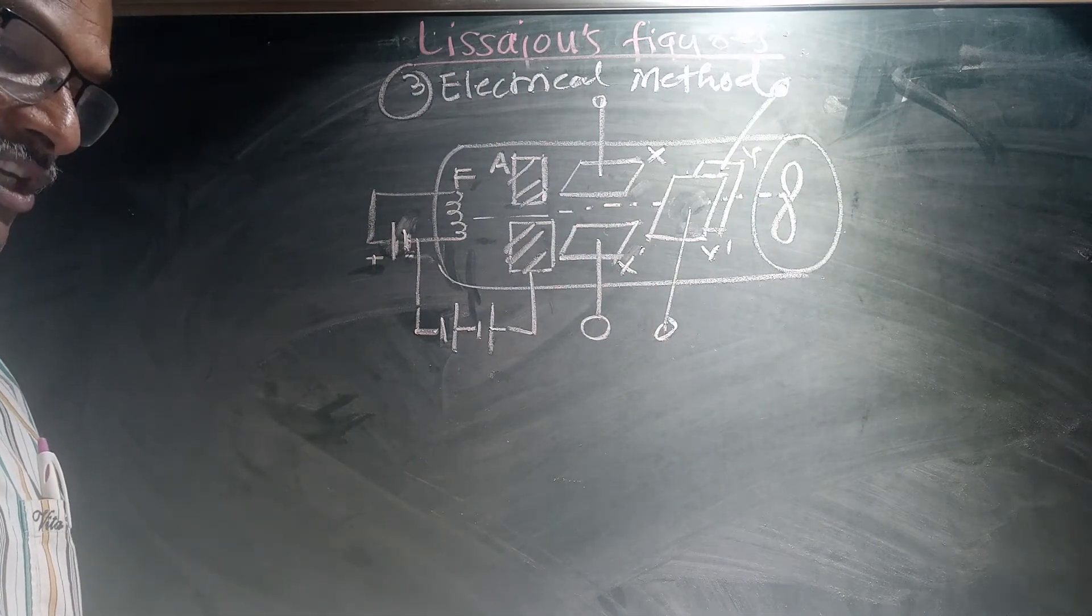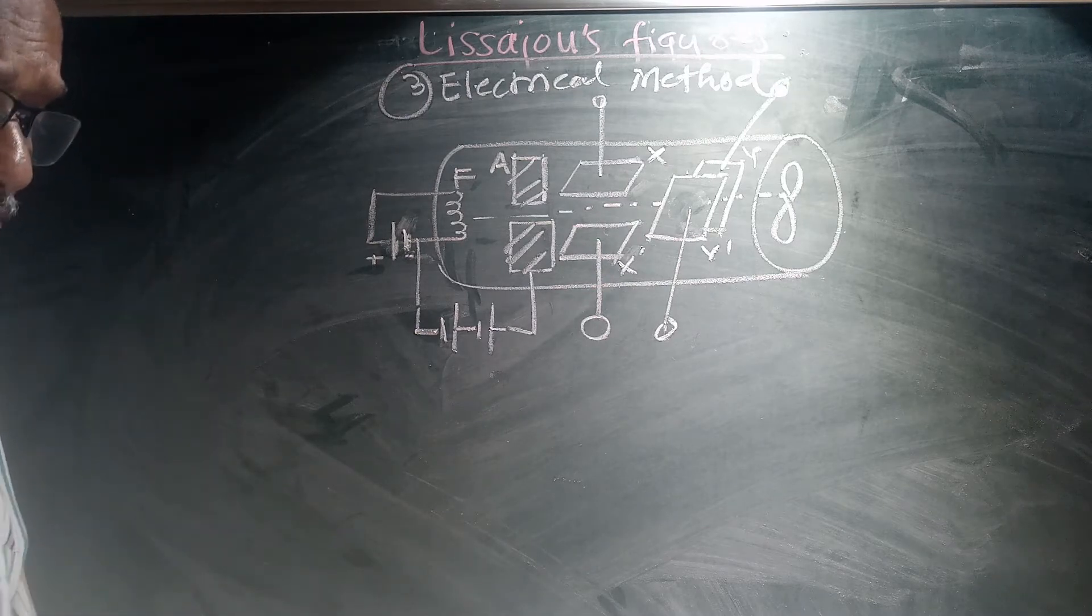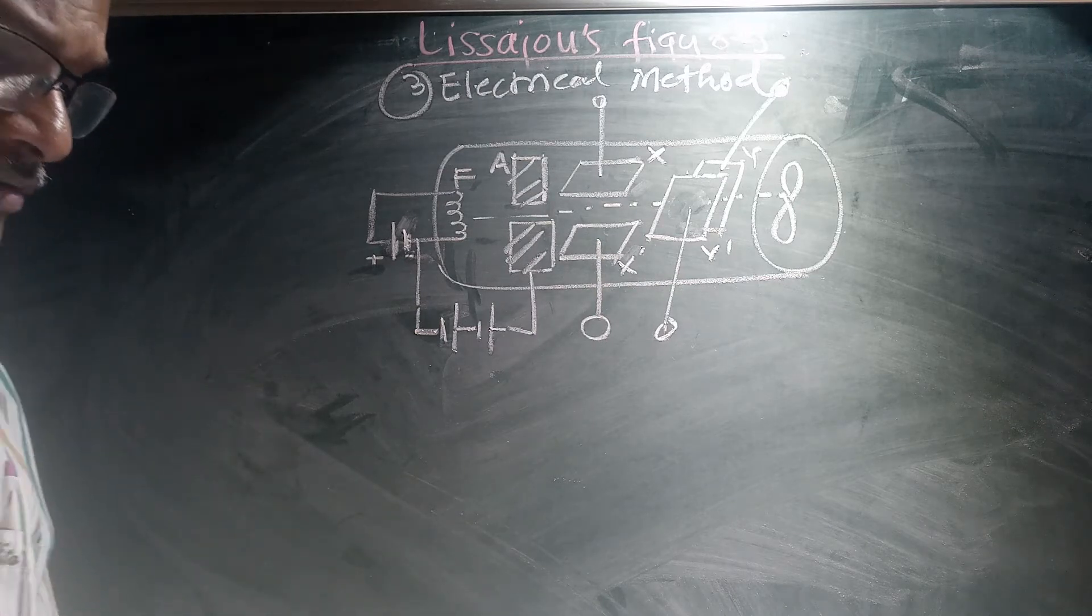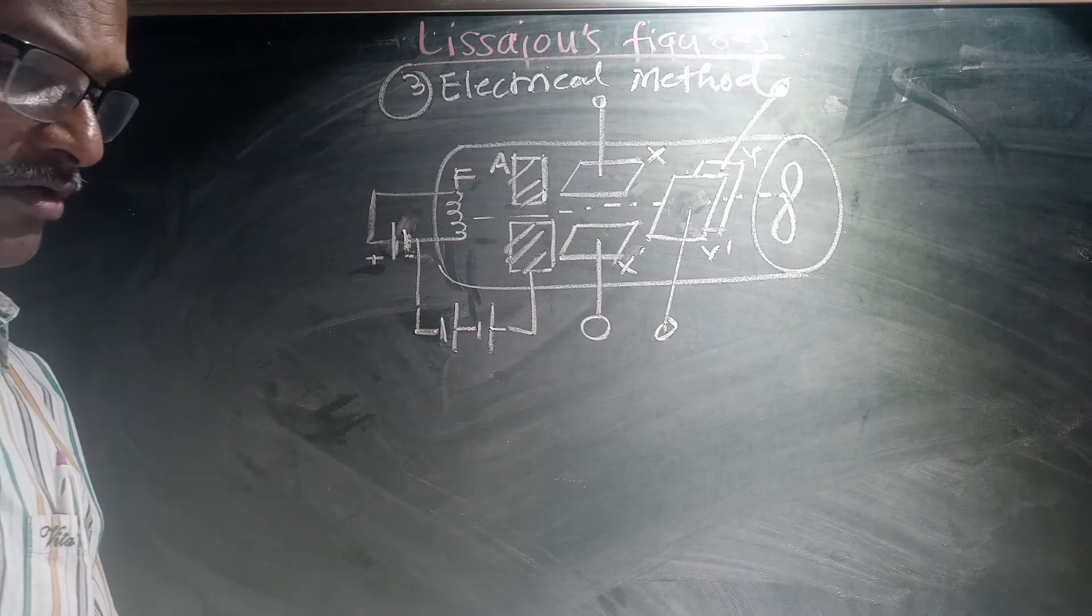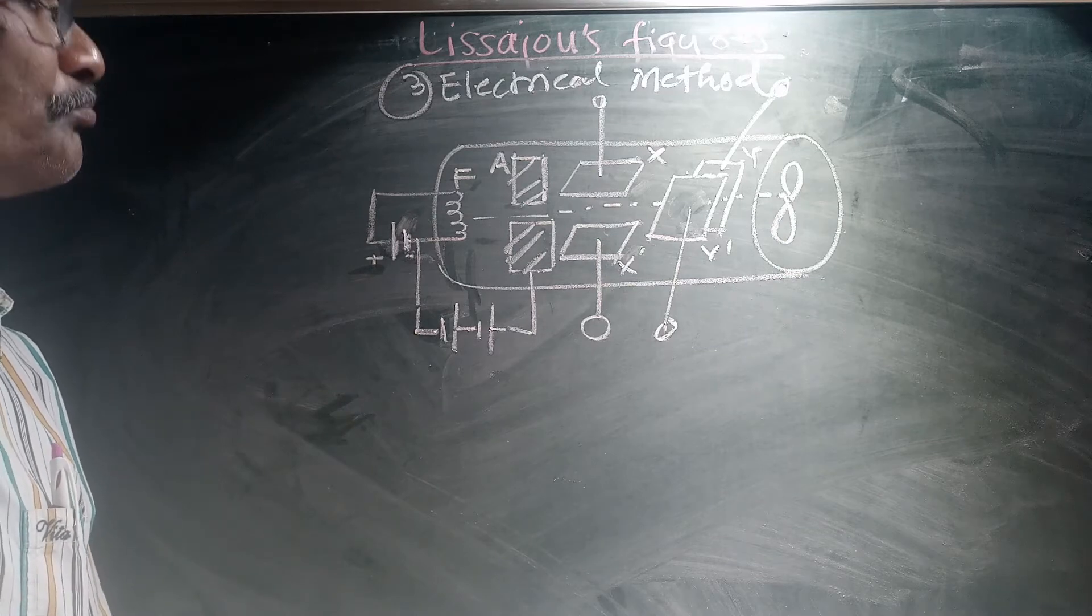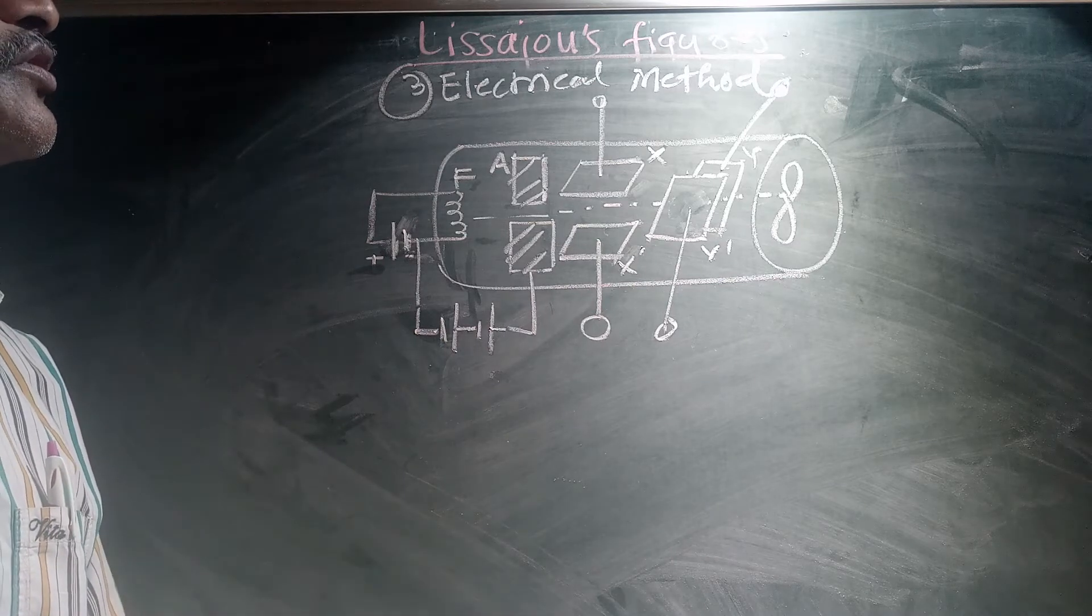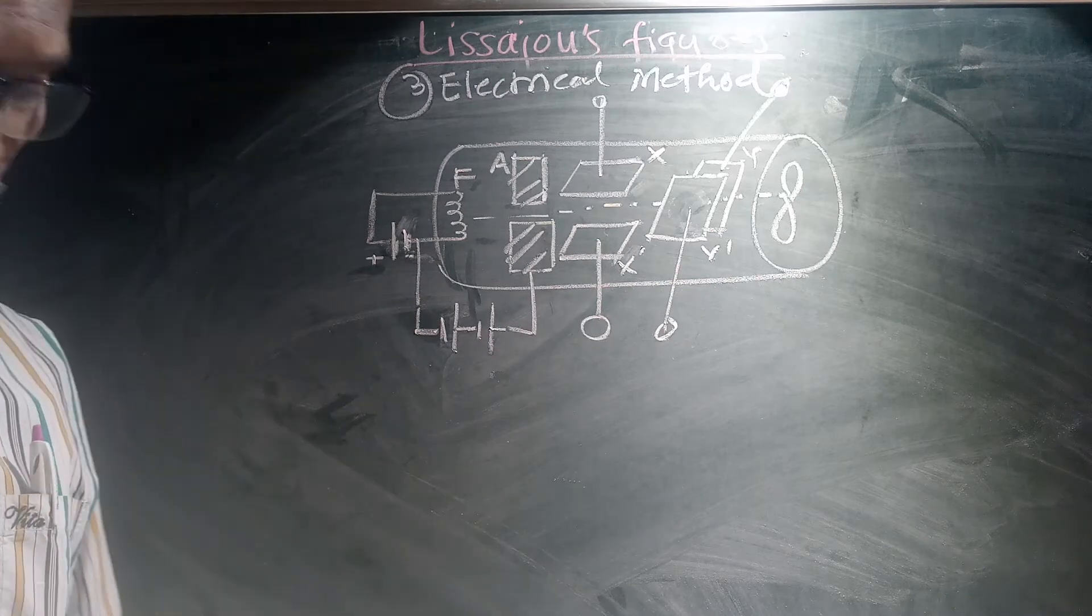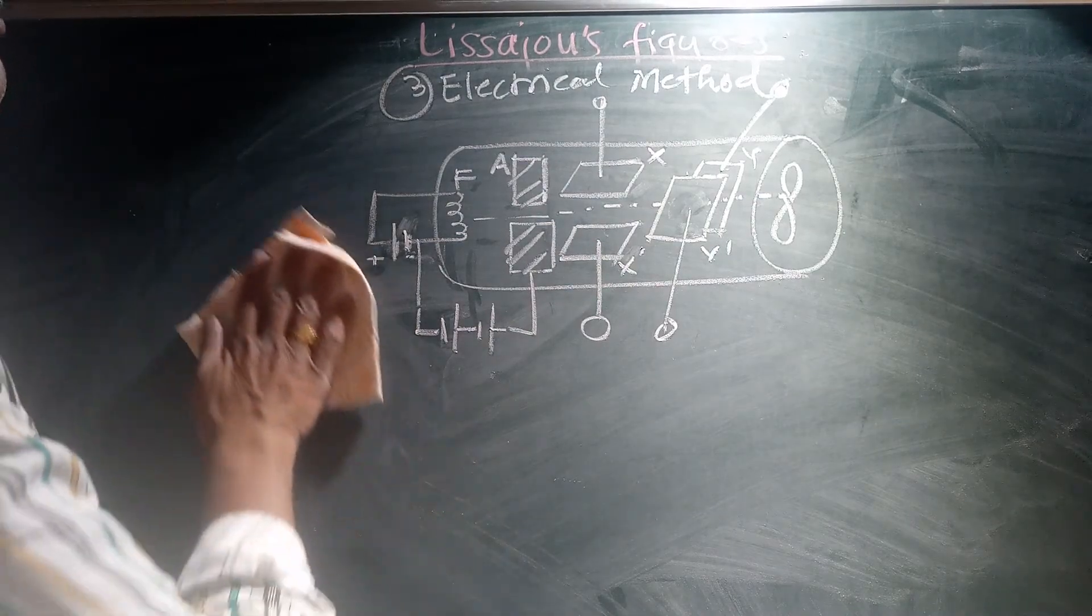Therefore we can study how the spot will move up and down or in different directions according to the voltage between the plates. This method is used to obtain the frequency. If two transformers are there and attached to different frequency sources, then we can compare the frequency of different instruments.